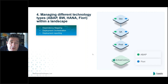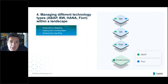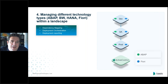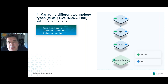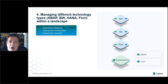The next scenario, especially relevant in the S4 world, is managing different technology types within the same landscape. For example, moving through an ABAP change that has an underlying CDS view, a Fiori object, or a BW object — all within the same landscape. The same requirements apply in terms of modeling and managing the dependencies between these objects, ensuring they all move together as part of a complete solution.